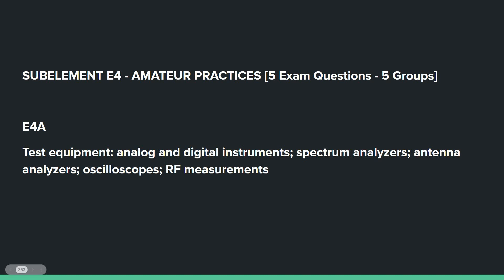Welcome back for those joining us for sub-element E4. For those who are just finding sub-element E4, you'll want to go back and check out the previous three sub-elements to get in line with your Extra Class Amateur Radio license. Sub-element E4 covers amateur radio practices. There are five exam questions that come out of the five groups in sub-element E4.